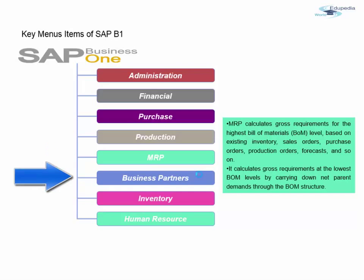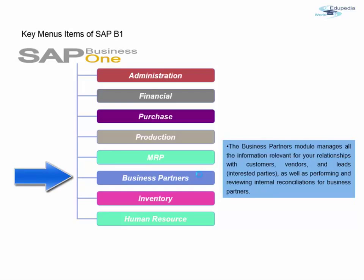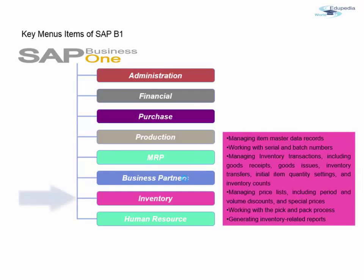Business Partners can consist of customers, vendors, and leads. Leads are interested parties who may or may not convert into customers. In the Business Partner module, you can specify ship-to and bill-to locations, the currency of the business partner, and much more. You also get an intelligent graph that helps you understand the business trend of each partner.